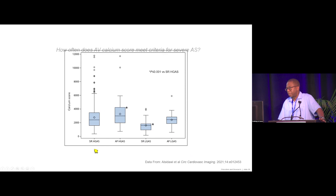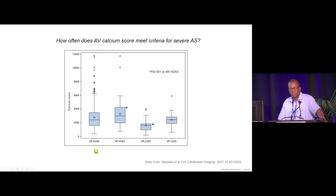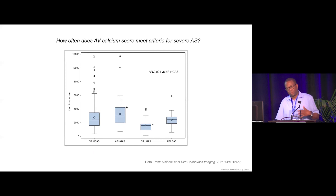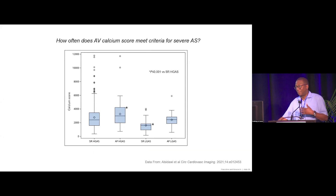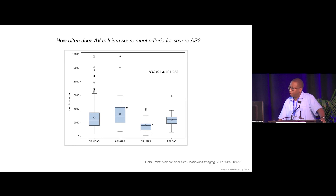When asking how often these calcium scores meet criteria for severe AS — threshold approximately 1,200–1,300 in women and 2,000 in men — 79% of sinus rhythm high-gradient AS patients met criteria for severe AS by calcium score.